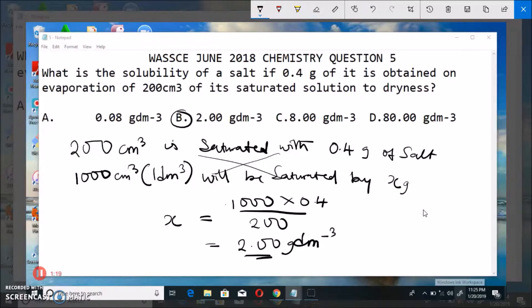Why do we use 1000 here? We use 1000 because we know that the definition of solubility is actually that the solubility of a solute in a solvent at a particular temperature is the maximum amount of the solute in moles or grams that will saturate 1 dm³ of the solvent at that temperature.